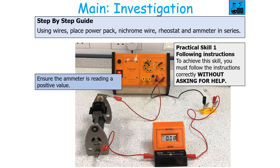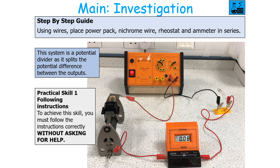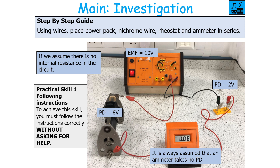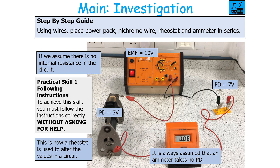Use wires to place the power pack, nichrome wire, rheostat and ammeter in series, ensuring the ammeter reads a positive value and placing one rheostat connector at the top and one at the bottom. This system is a potential divider — it splits the potential difference between outputs. For example, if the EMF of the power source is 10 volts, the rheostat could take 6 volts and the wire 4 volts. This is why a rheostat cannot produce zero potential difference — it always takes some, acting as a potential divider. You can however use the rheostat to alter values and achieve different potential differences across the wire.